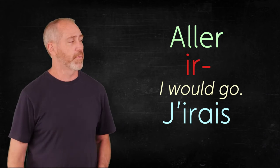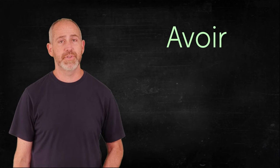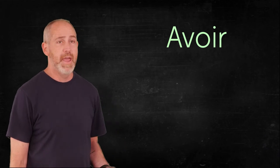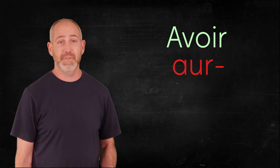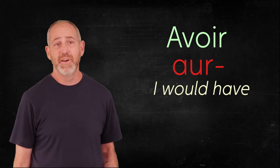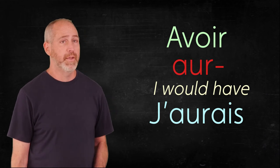So I'm going to do all je forms right here. Now, for avoir, to have, this verb, the stem is going to be A-U-R. Example, I would have, that would be j'aurais, j'aurais.